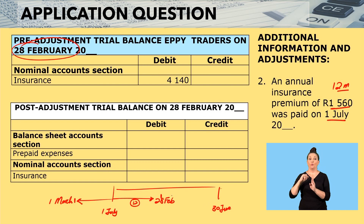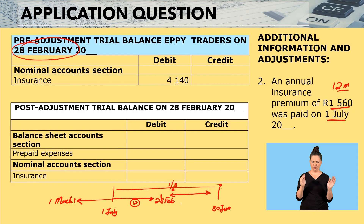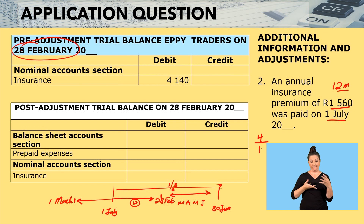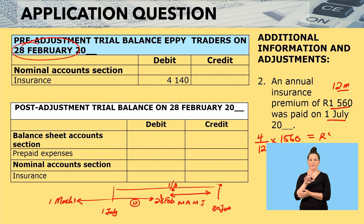The period is our problem — from 1 March until 30 June. How many months is that? We count March, April, May, and June — that gives us 4 months. So we have 4 months over the total of 12, multiplied by 1,560. If we multiply this, we get 520.